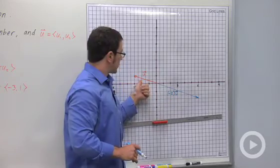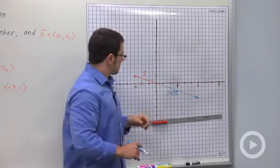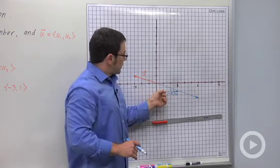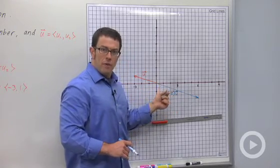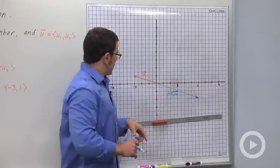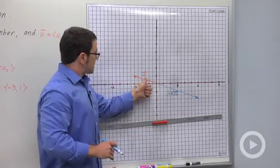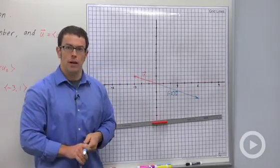Whenever you multiply a vector by a negative number, you'll reverse its direction. So scalar multiplication can lengthen or shorten a vector, and it can reverse its direction. But if we multiply by a positive constant, we always get a vector in the same direction.